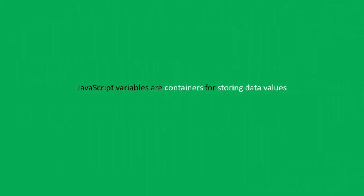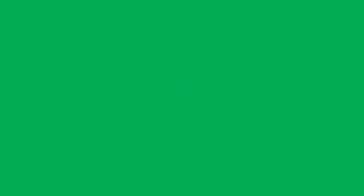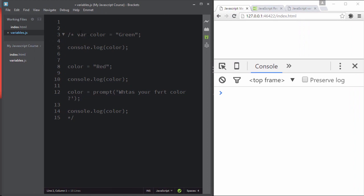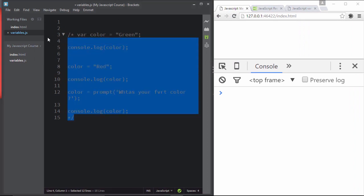Welcome back. In the last movie you learned how to create variables, assign a value or data to variables, and retrieve and print them on screen. You even learned how to take user input and print it on screen. Now in this movie we're going to understand variables in a little more depth. Your variable name should be unique — all JavaScript variables must be identified with unique names.